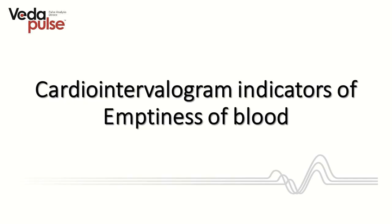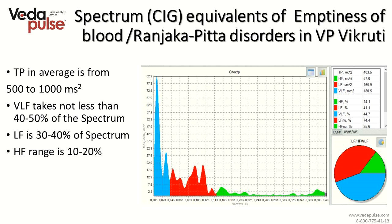Let's see cardio intervalogram indicators of empty blood. In the spectrum tab, the total power index would be in the range between 500 and 1000 ms², indicating a decrease of energy typical for this constitution type. The sum of very low frequency, low frequency and high frequency values equals 100% of total power. Very low frequency takes about 50%, low frequency is 40%, and high frequency is 10 to 20% of total power.